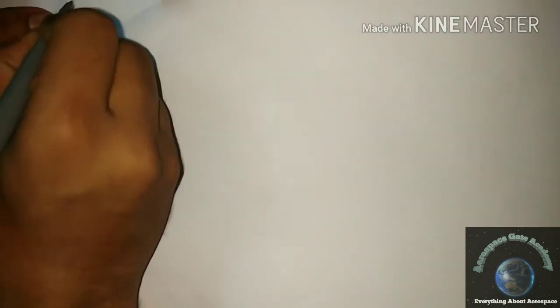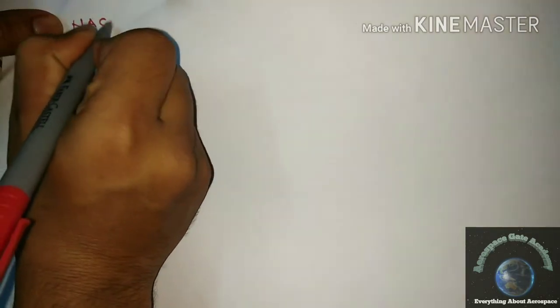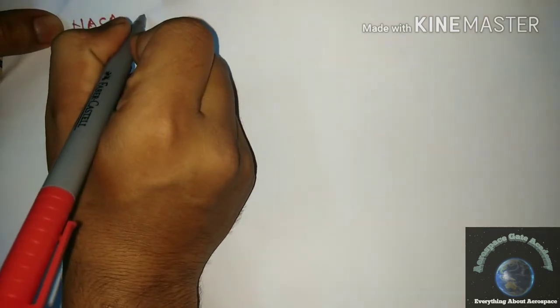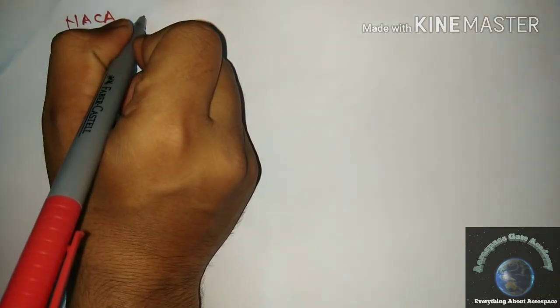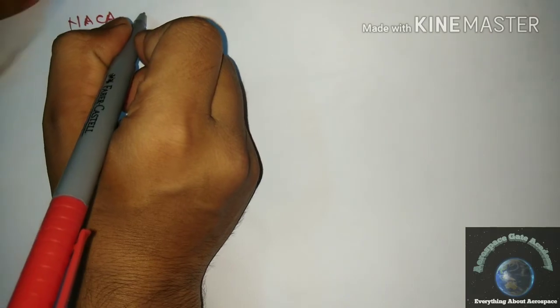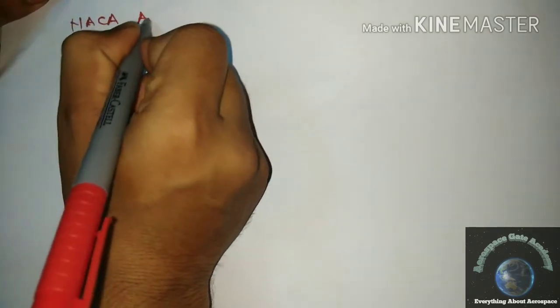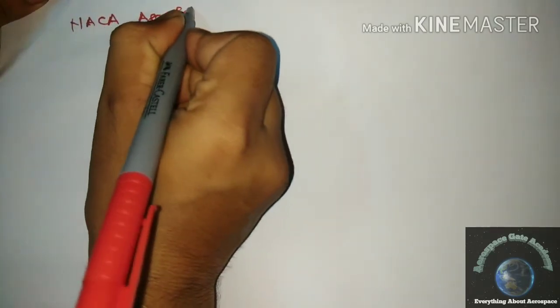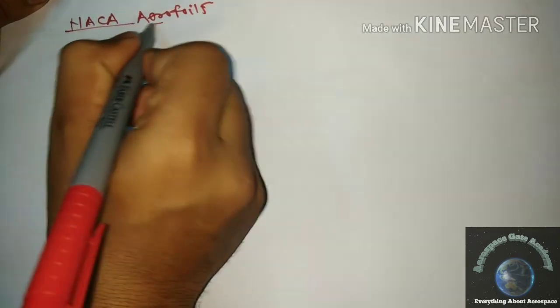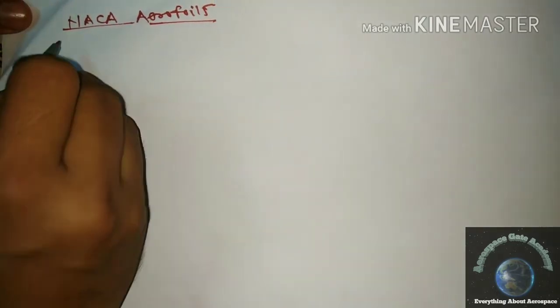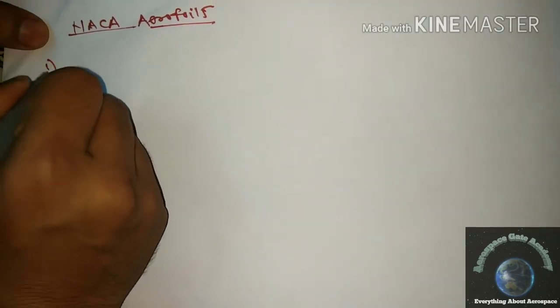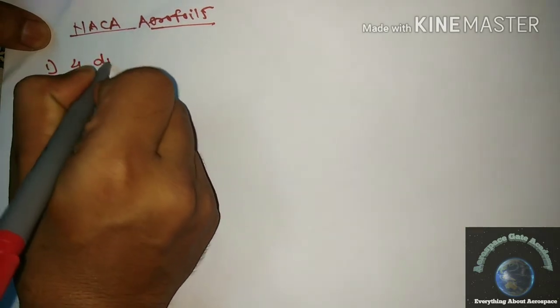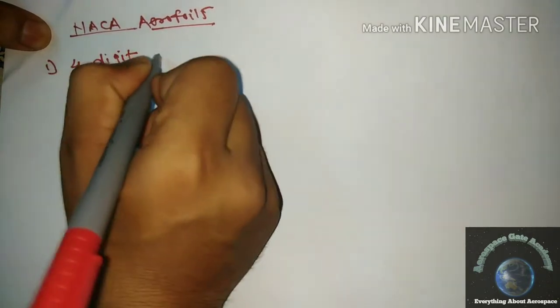Namaste guys, today we are going to see about the types of NACA airfoils. The first type of NACA airfoil is the four-digit airfoil.